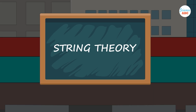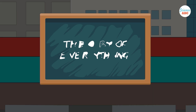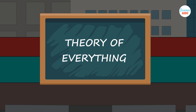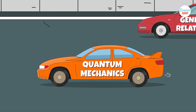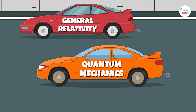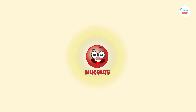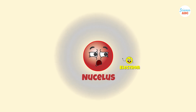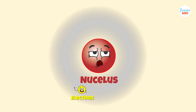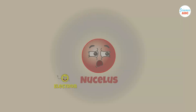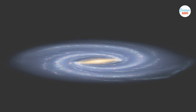String theory is often referred to as the theory of everything, because it has the potential to unify the principles of quantum mechanics and general relativity, explaining everything in the universe, from subatomic particles to massive galaxies.